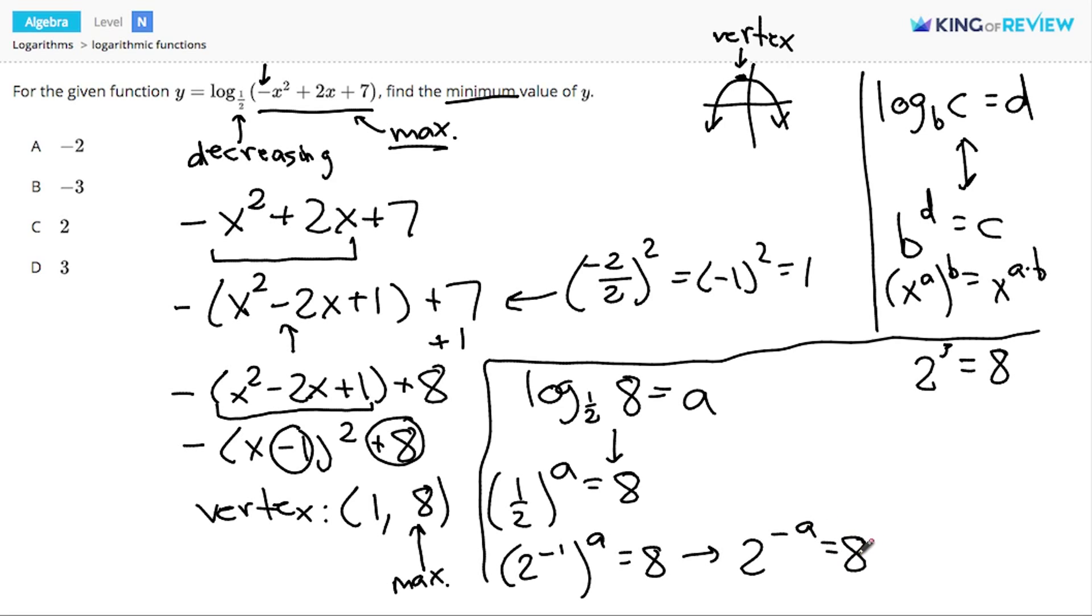Since I know 2 to the 3rd equals 8, that means that negative a has to be equal to 3, which means a is negative 3. And there's the answer to what the minimum value of y is.